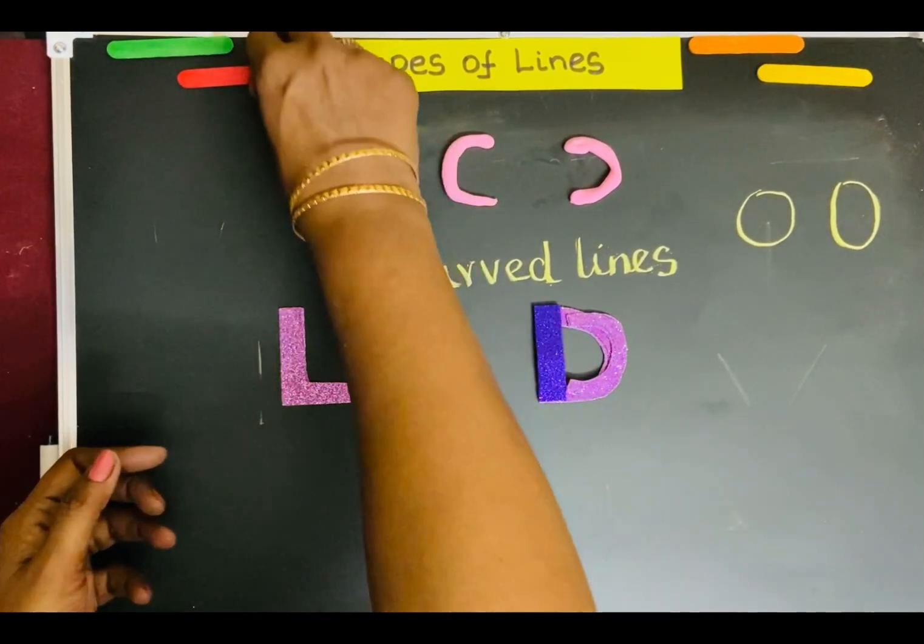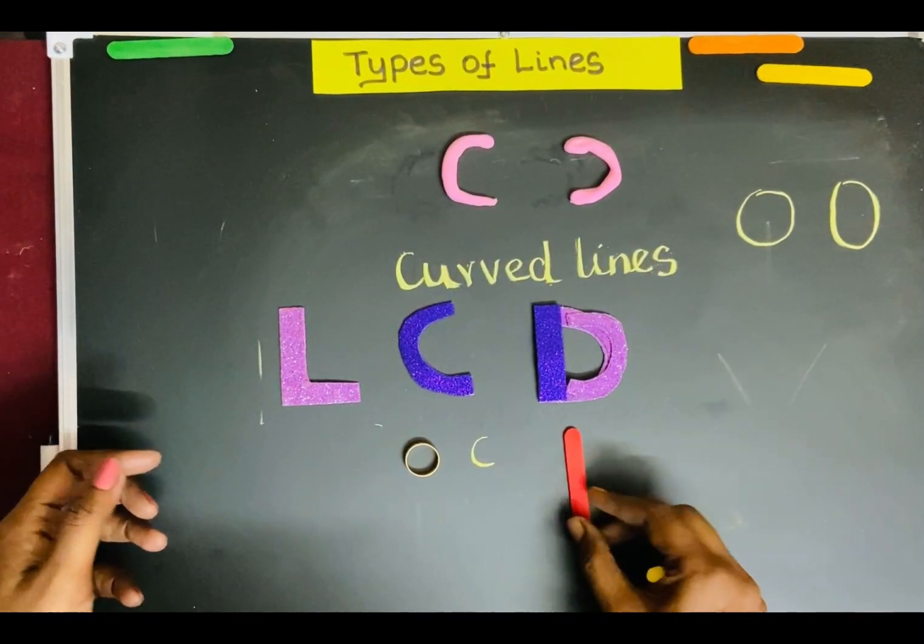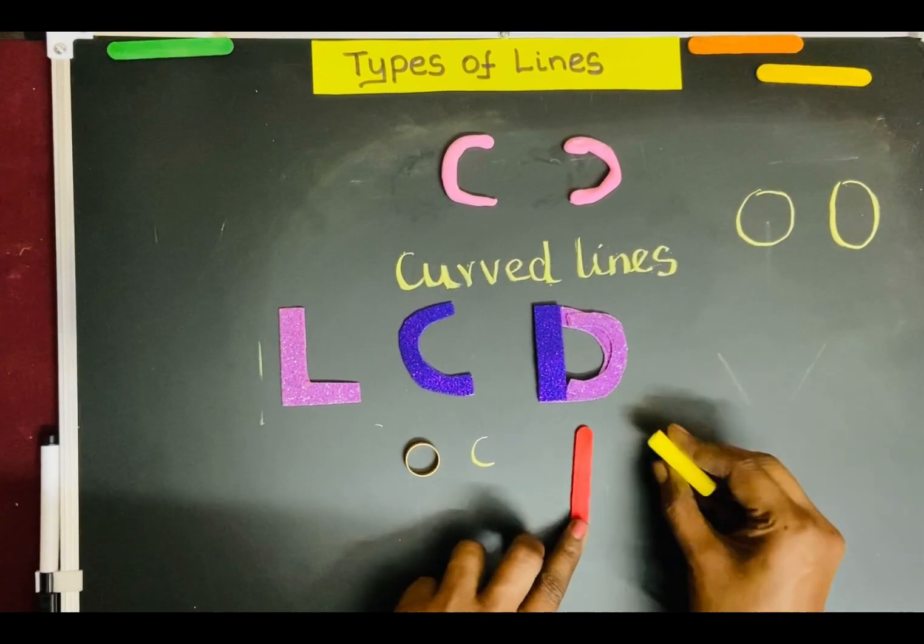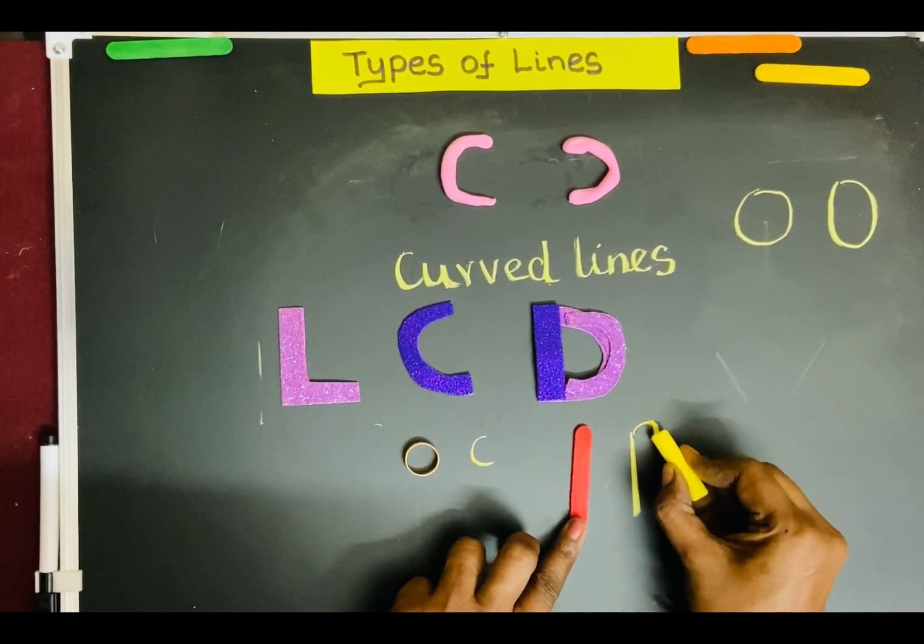Now see ice cream stick. It is made out of straight lines and curved lines.